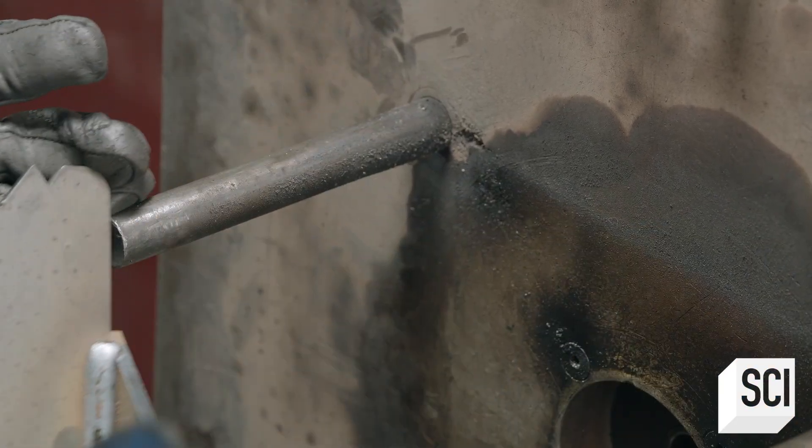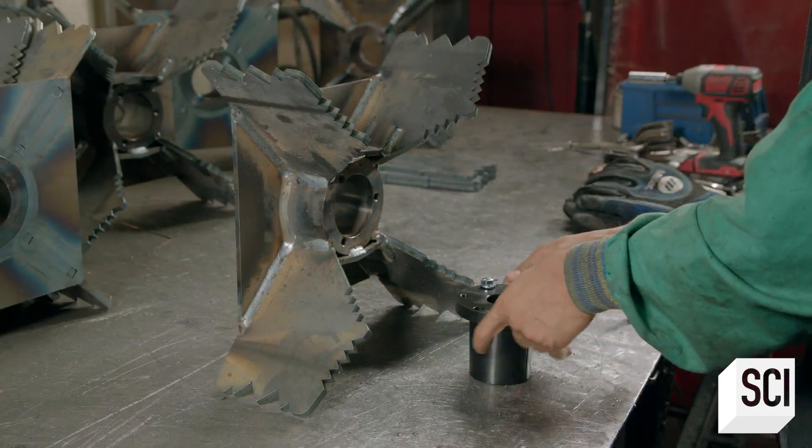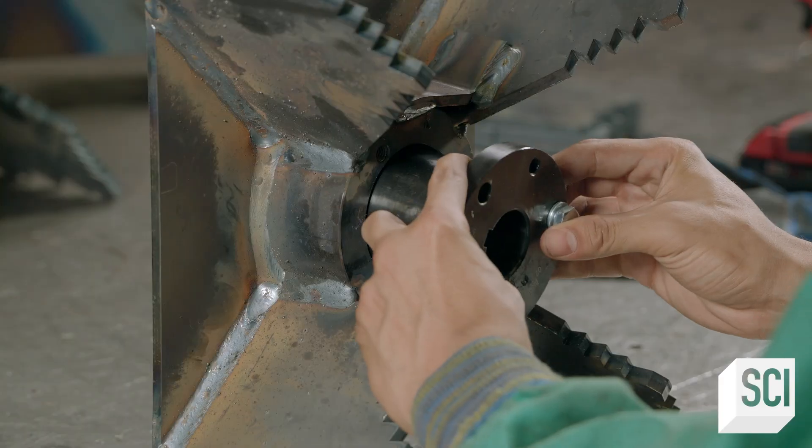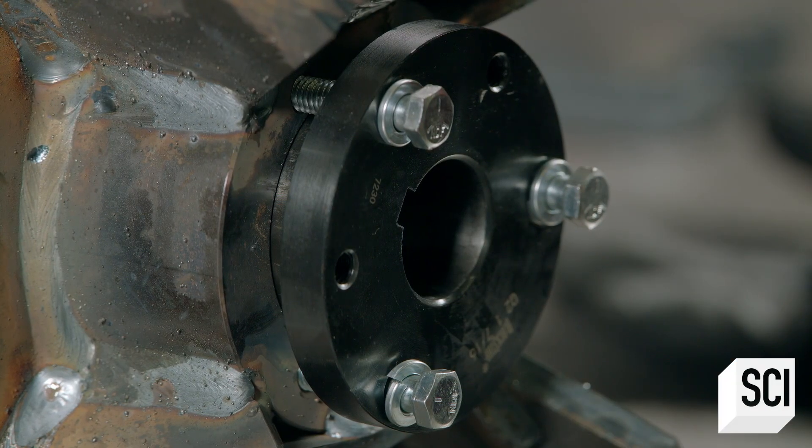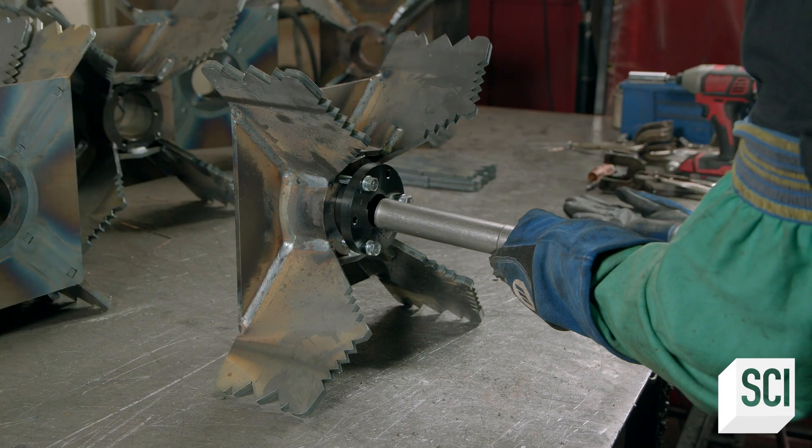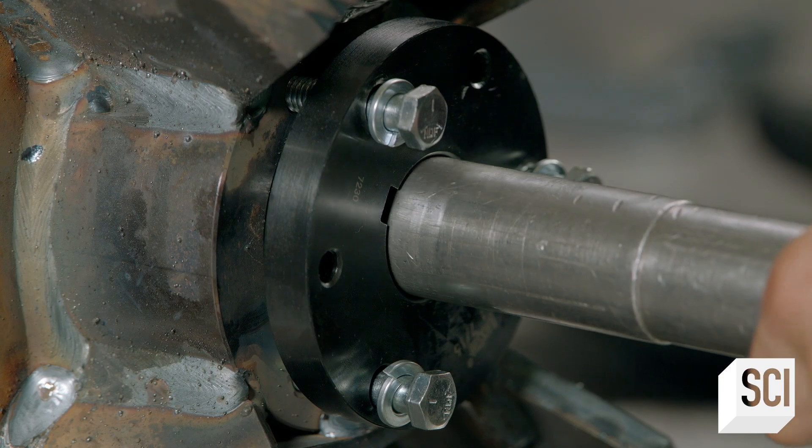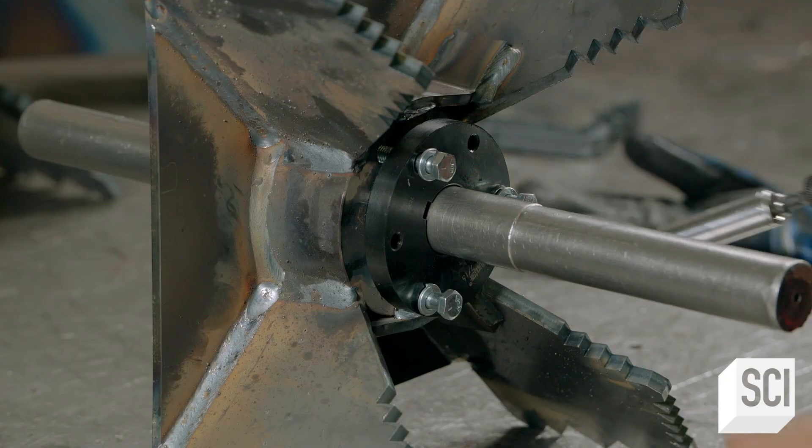The technician completes the assembly by bolting a compression hub to the center. The hub holds the engine crankshaft together, which rotates the impeller. Then, he inserts a simulated crankshaft and tightens the compression hub.